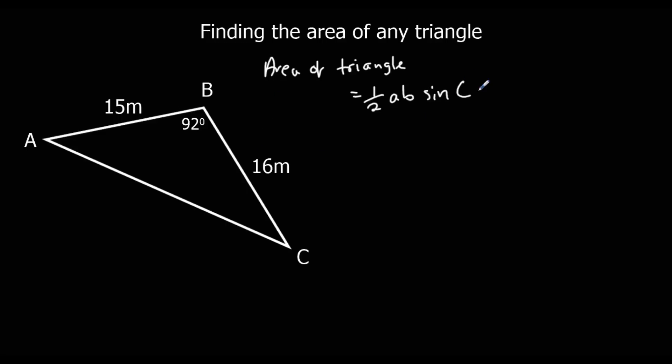The angle is going to be our C. So this 92 here is going to be our C. And the two lengths next to it are going to be a and b in any order. Because this is little c. Opposite big C is little c. So these two are a and b. It doesn't matter which way round they go, because we're just going to multiply them together. So let's substitute them in.